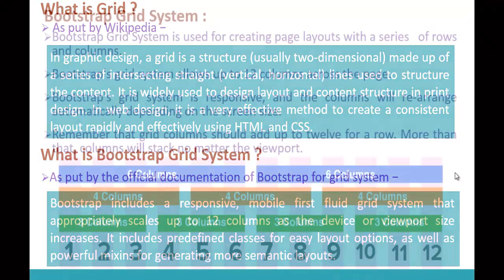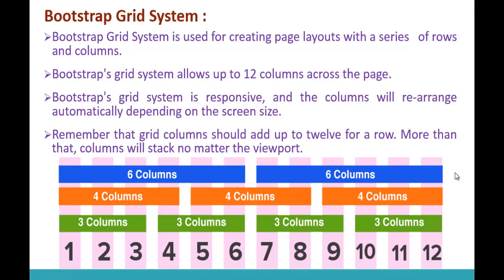Coming to the next slide, Bootstrap Grid System is used for creating the page layout with a series of rows and columns. Page layout is the term used to describe how each web page should appear when it is opened in the web browser. It includes elements like margins, number of columns, header and footer, etc. Bootstrap Grid System allows up to 12 columns across the page — it's up to us how we make use of those 12 columns to create the page layout.